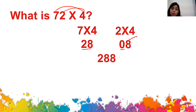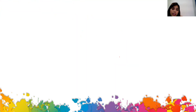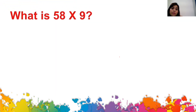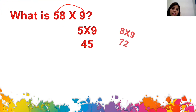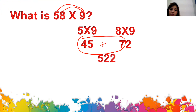Once you are through with the practice, you can give the answer in 5 seconds. For example, 58 times 9: 5 times 9 is 45, 8 times 9 is 72. Add 45 and 7 which is 52, then write 2 as it is — the answer is 522.